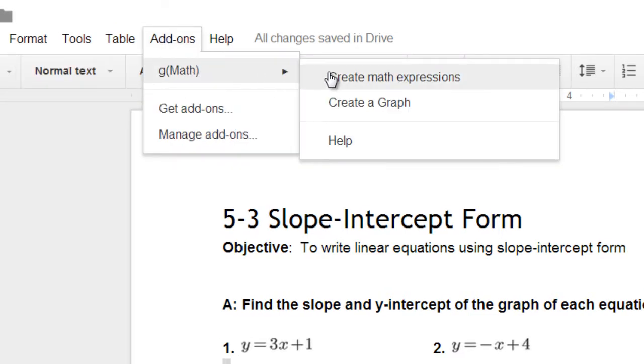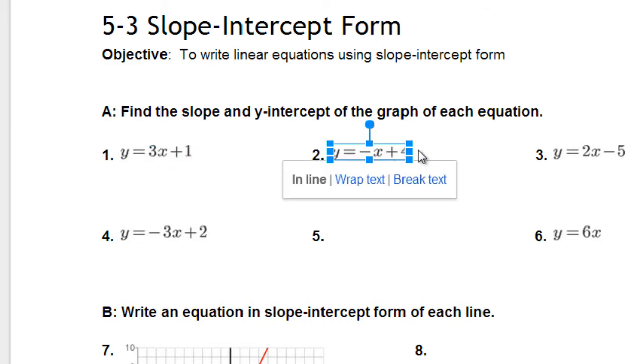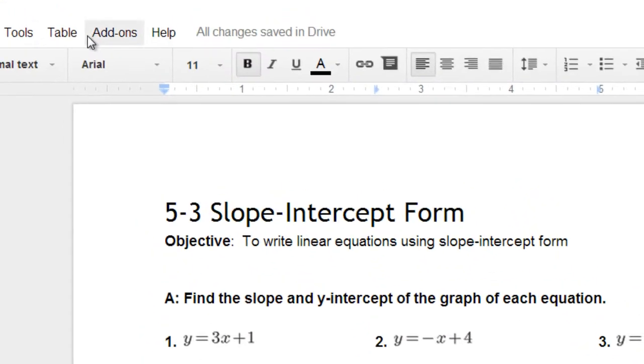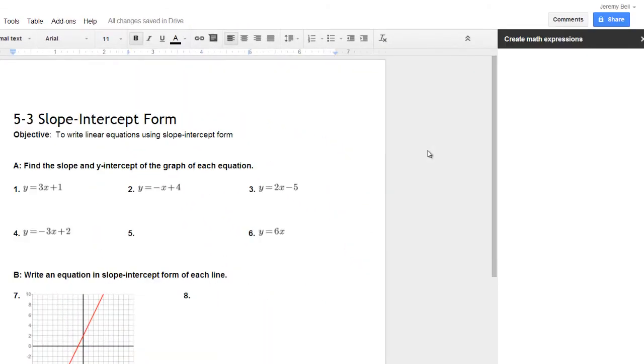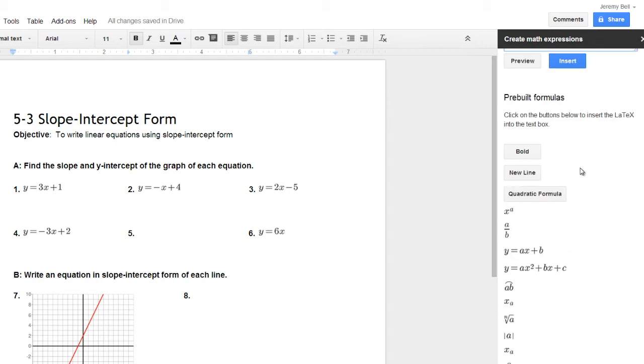So go over to G-Math and go to create math expressions here. Let me put my cursor in the right spot. So I created all these expressions before using G-Math, and I will fill in this missing one right here. So G-Math, create math expressions. Boom, this sidebar is going to pop up over here. Now check this out.